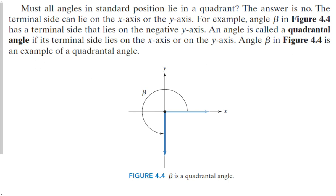Do all angles in standard position have to lie in a specific quadrant? Of course, the answer is no, because the terminal side could lie on the x-axis or on the y-axis. For example, beta finishes on the negative part of the y-axis. This is called a quadrantal angle. Quadrantal angles don't necessarily lie in a specific quadrant — they are actually on one of the axes, in between two quadrants.